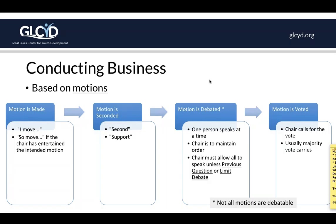Once debate has concluded, the motion is voted on. The chair is responsible to make sure all people are able to have their voice heard, again unless previous question or debate has been limited ahead of time. Part of Robert's Rules of Order and parliamentary procedure is making sure all voices are heard, so you don't want to cut anyone off. The chair can simply say "any other debate?" and if no one says anything, call it for a vote. Usually it's a majority that carries.